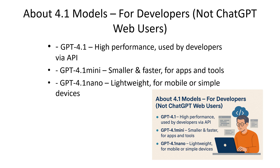If you're using ChatGPT through your browser at chat.openai.com, you'll be using GPT-4o if you have a pro subscription. You can disregard the 4.1 models unless you're curious about what's powering future tools and apps built on ChatGPT. The 4.1 was announced in the last couple of weeks, but it doesn't affect you at all — I wouldn't pay any attention to it.